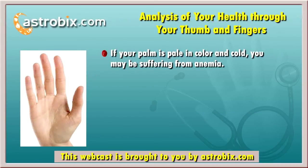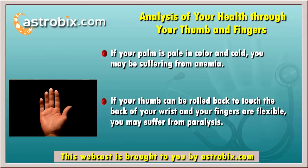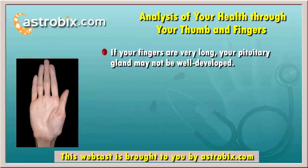On the other hand, if your palm is pale in color and cold, it is possible that you are suffering from anemia. If you roll your thumb backwards and it touches the back of your palm and your fingers are very flexible, there are chances that you may suffer from paralysis in future. If you have very long fingers in your hand, it is possible that your pituitary gland is not well developed.